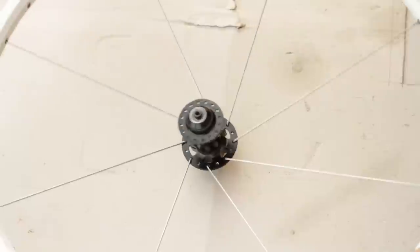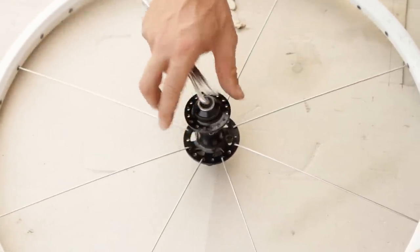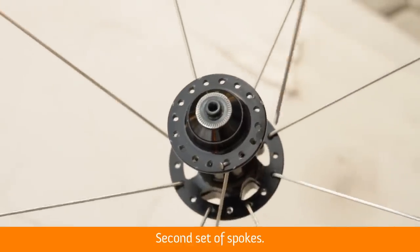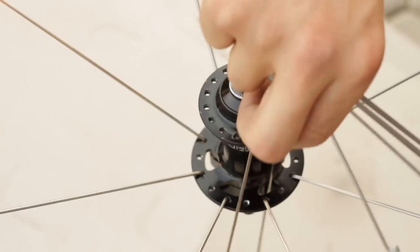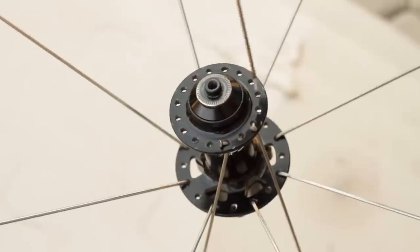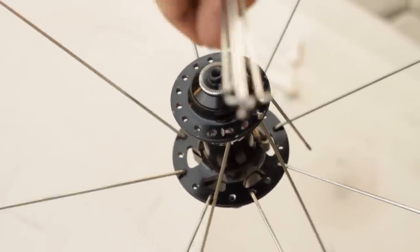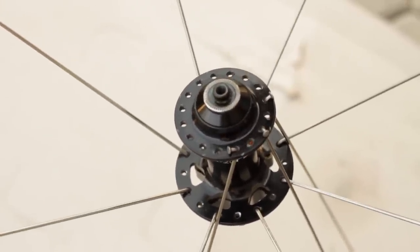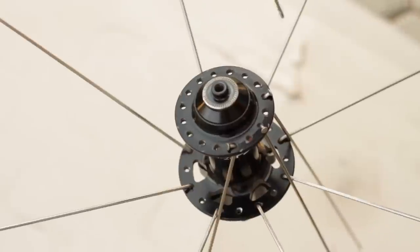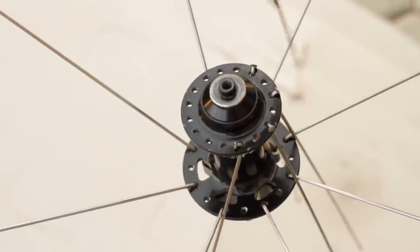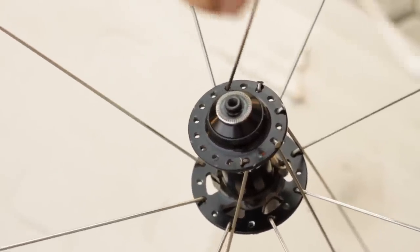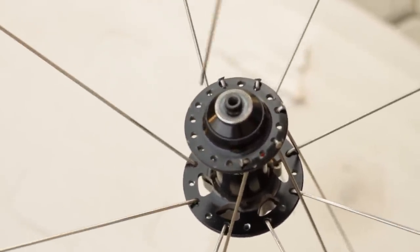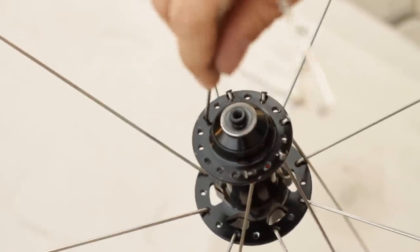Flip the wheel over. Second set of spokes. Notice that the holes in one flange do not line up with the holes in the other flange. Each hole lines up in between two holes on the opposite flange. Drop a spoke down through the hole in the top flange that is immediately clockwise from the first spoke you installed. If this is a rear wheel or front disc brake wheel, you are now using the longer spokes.